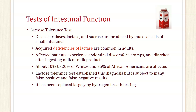The lactose tolerance test: disaccharidases like lactase and sucrase are produced by mucosal cells of the small intestine. Lactase is needed to break down lactose — lactose is the sugar, lactase is the enzyme. Without this enzyme, lactose cannot be broken down. Acquired deficiencies of lactase are common in adults; affected patients will have abdominal discomfort, cramps, and diarrhea after ingesting milk products. About 10–20% of whites and 75% of African Americans are affected. The lactose tolerance test has largely been replaced by hydrogen breath testing.